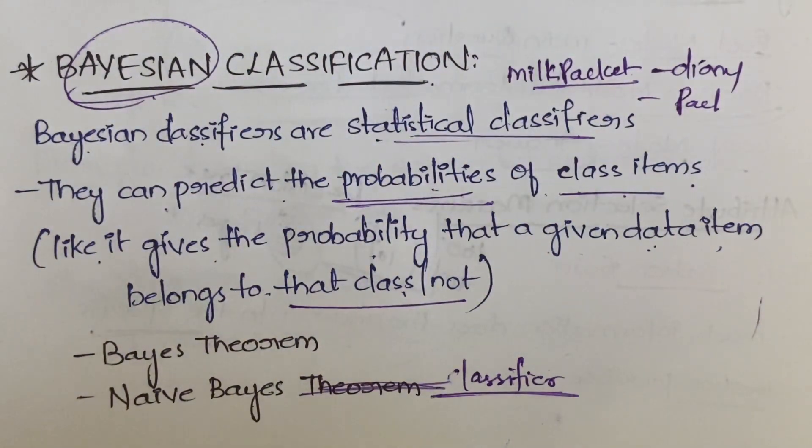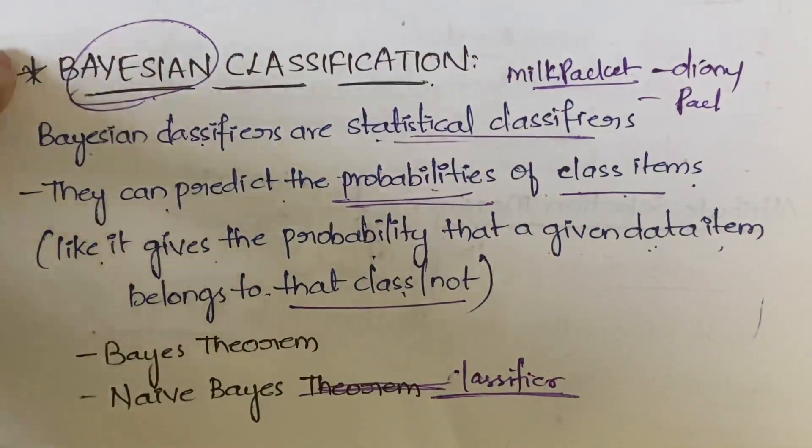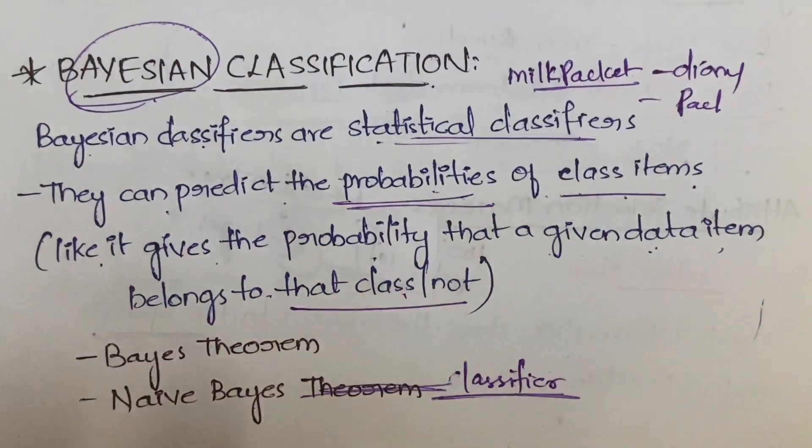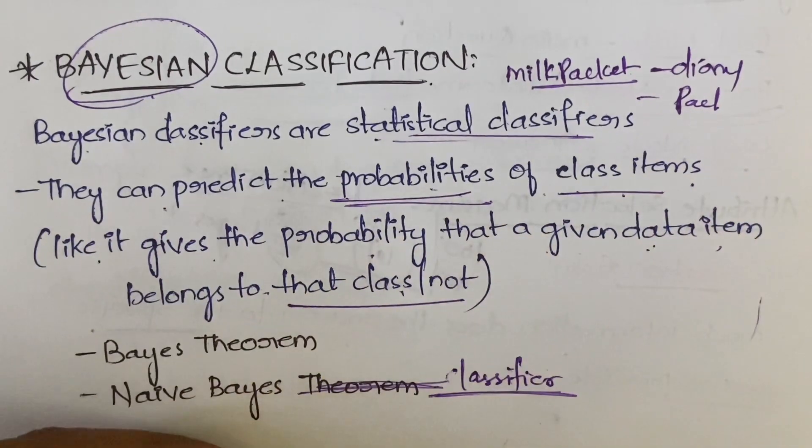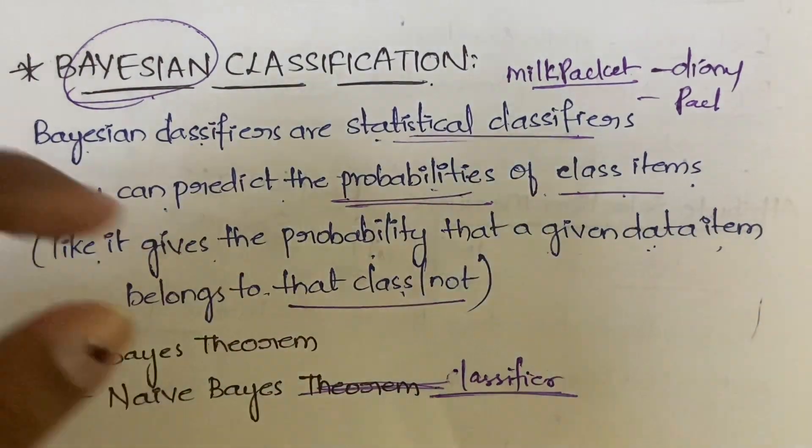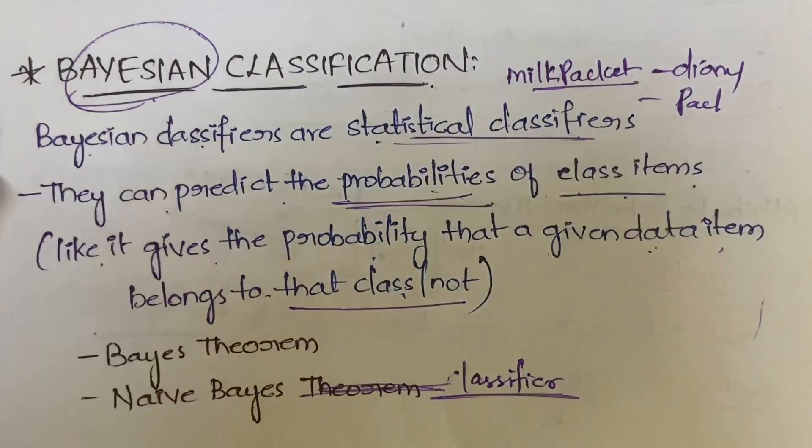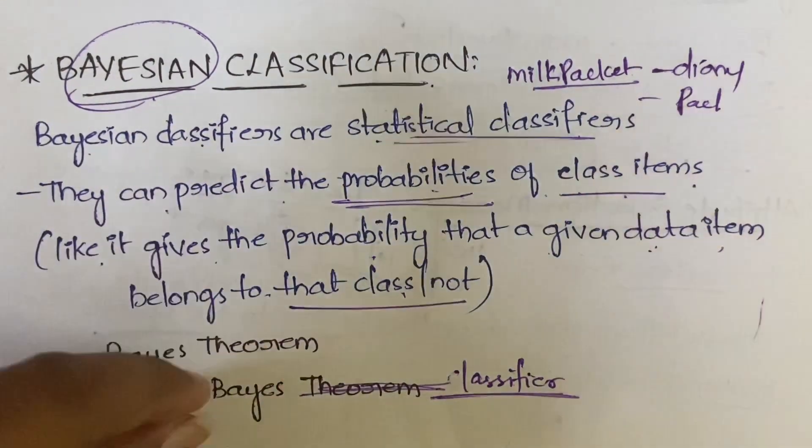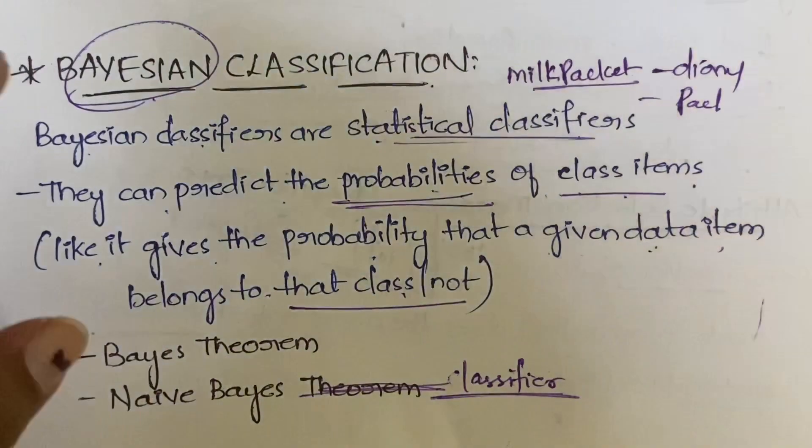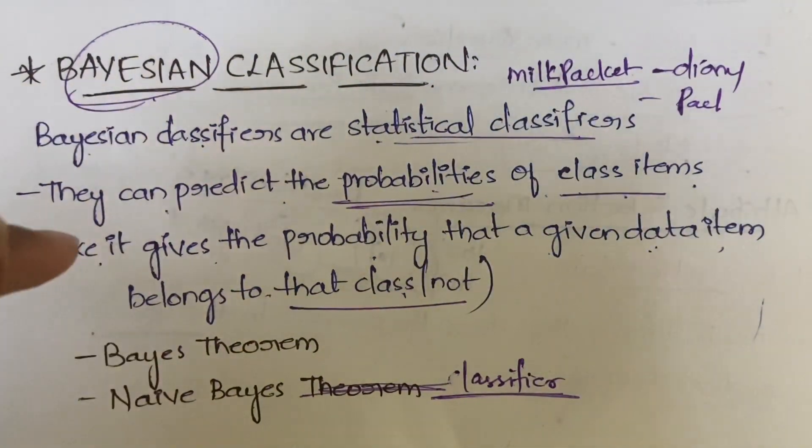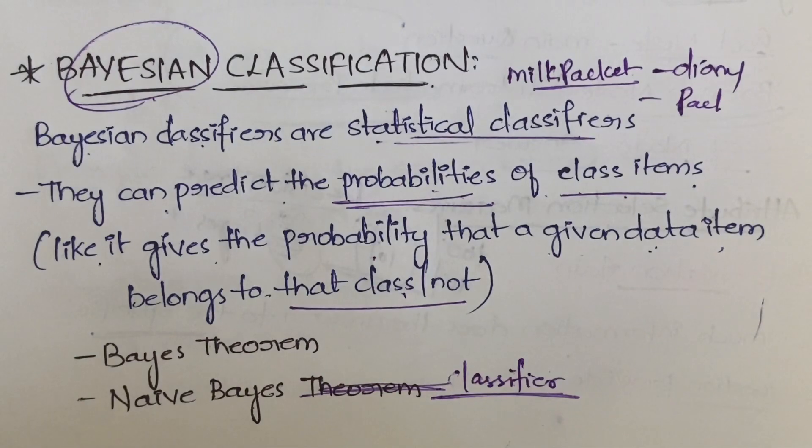In the exam, if you are asked about Bayesian classification, based on the marks you can write only about the definition of Bayesian classification, Naive Bayes classifier, or you can write about Bayesian classification, Bayes theorem, and the Bayes classifier. Bayes theorem and Naive Bayes classifier I already did in my machine learning playlist. I will give you the links of these two videos in the description box.